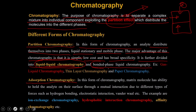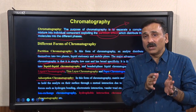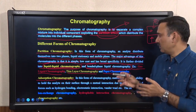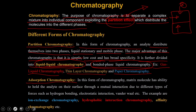In bonded phase liquid chromatography, a liquid layer is absorbed onto a solid support and molecules are partitioned between the bonded liquid and the liquid mobile phase. Classical examples of partition chromatography include gas-liquid chromatography, thin layer chromatography, and paper chromatography — some using liquid-liquid partition and some using bonded phase liquid chromatography.